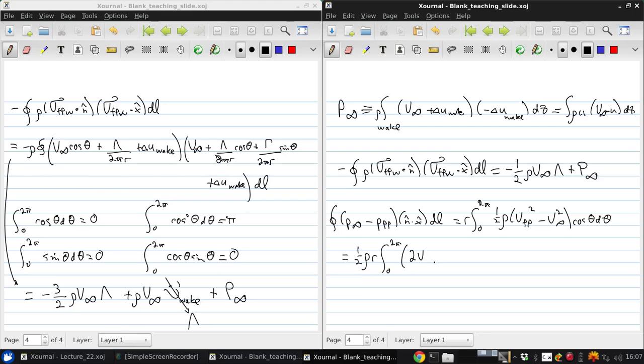plus in our earlier expression we get one half rho r integral from zero to 2 pi of 2 V infinity lambda over 2 pi r cos theta plus 2 V infinity gamma over 2 pi r sin theta plus lambda squared plus gamma squared over 2 pi r squared cos theta d theta.